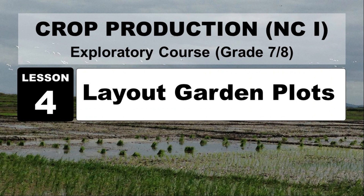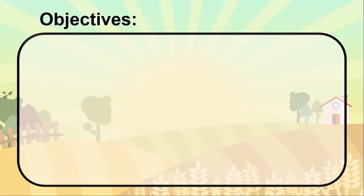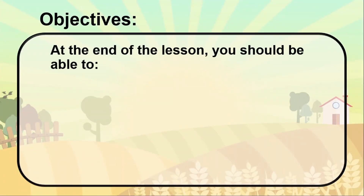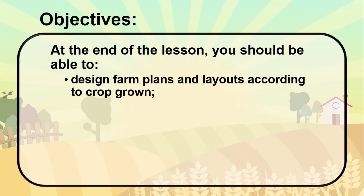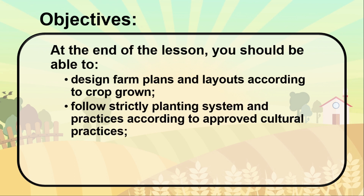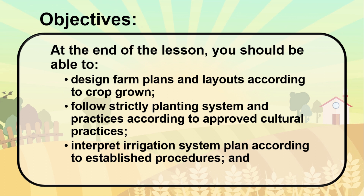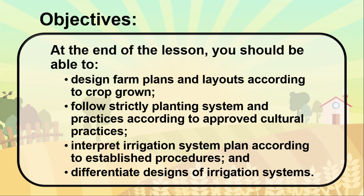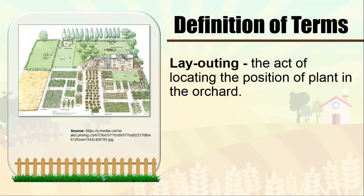Good day to everyone. For today, we will be talking about Lesson 4: Layout Garden Plants. At the end of the lesson, you should be able to design farm plants and layouts according to crop grown, follow strictly planting systems and practices according to approved cultural practices, interpret irrigation system plans according to established procedures, and differentiate designs of irrigation systems.